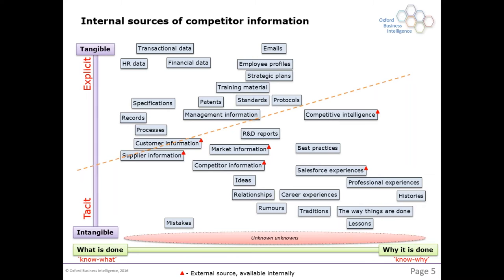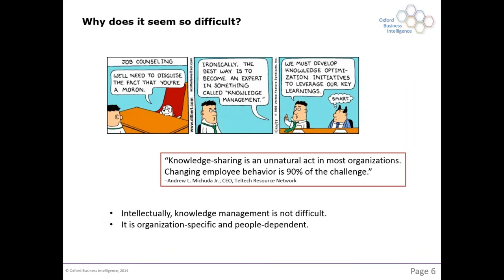As we get towards the bottom of the chart, there's increasing potential value but increasing difficulty in finding and manipulating that knowledge. Another key difference: explicit knowledge tends to be about the 'know what' — what was done — while tacit knowledge tends to be about the 'why' — why a decision was made. Those 'why' decisions are very rarely documented, but they're absolutely vital to understanding how our organizations operate and how we need to make decisions in the future. That's where a lot of competitive intelligence can be found.